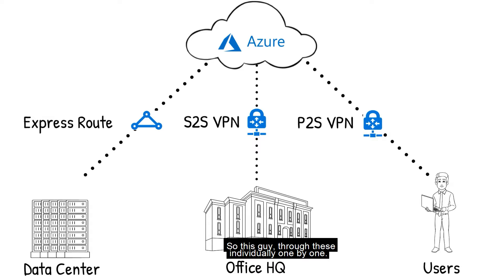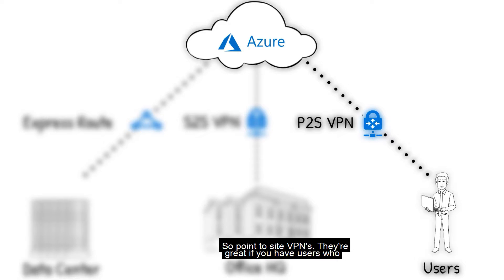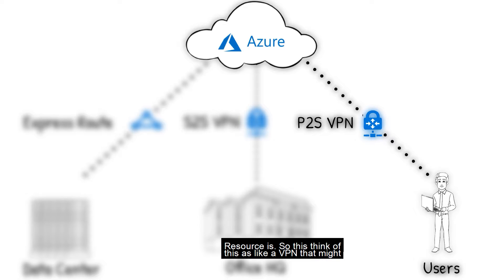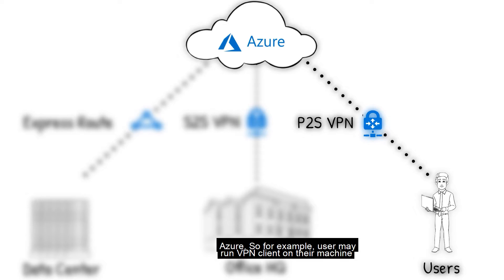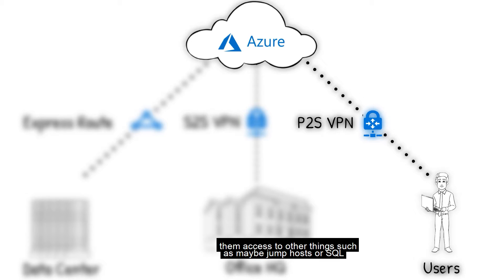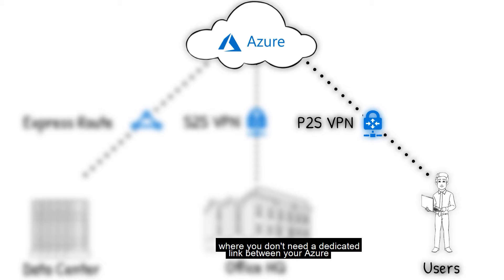So let's go through these individually one by one. Point-to-site VPNs are great if you have users who maybe need to get into the Azure networks to access Azure resources. Think of this as like a VPN that users might already connect to, but the landing point is in Azure. For example, a user may run a VPN client on their machine that connects into a virtual network inside Azure, giving them access to other things such as jump hosts or SQL servers. This method is pretty common in smaller environments where you don't need a dedicated link between your Azure environment and your on-premises networks.